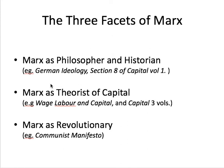Finally, there's Marx the revolutionary. He takes all his ideas as philosopher, historian, and theorist of capital and puts them into practice, which is a lot of what the Communist Manifesto is — a distillation of his thinking summed up in 30 pages. The Communist Manifesto contains his theory of history, his theory of labor value, and his theory of class. That's the introduction to Marx, and now we'll look at the background and main ideas of the Communist Manifesto.